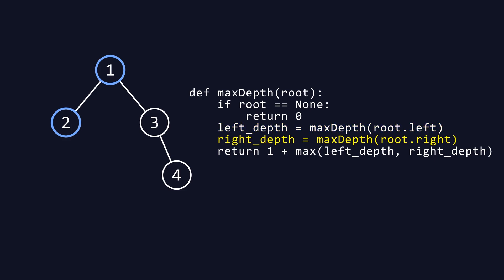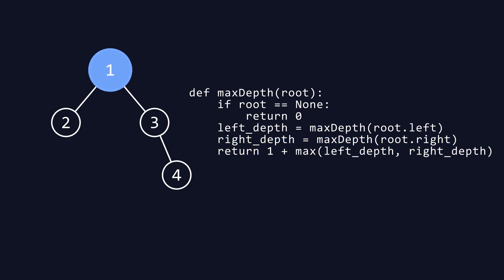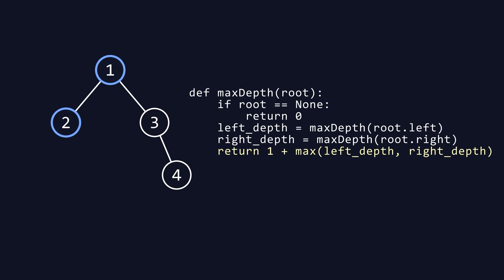Next, the function makes a recursive call to itself with root.left. This call computes the maximum depth of the left subtree of the current node, and the result is stored in the variable left_depth. Similarly, the function makes another recursive call with root.right to compute the maximum depth of the right subtree, storing the result in right_depth. Finally, the function returns one plus max(left_depth, right_depth). The max part finds the greater depth between the left and right subtrees, and adding one accounts for the current node's depth.